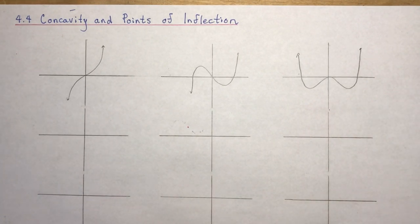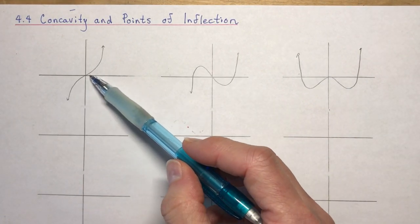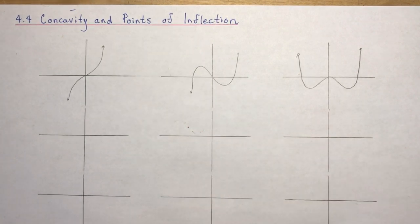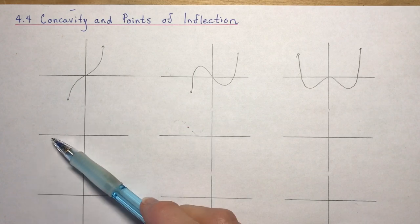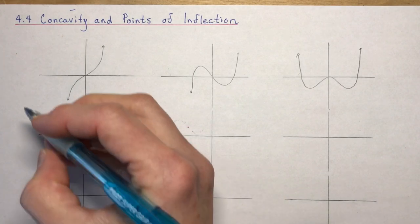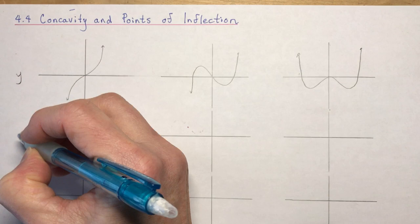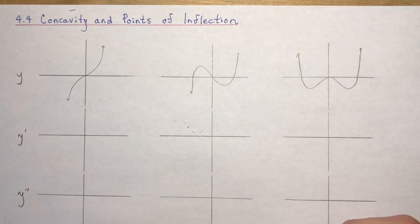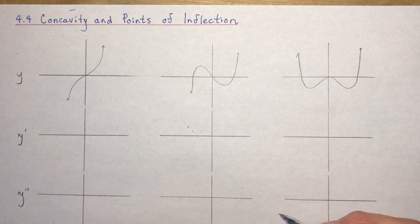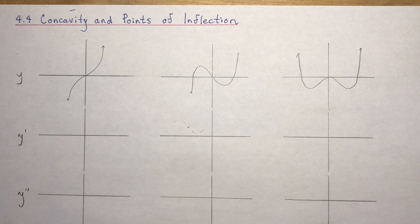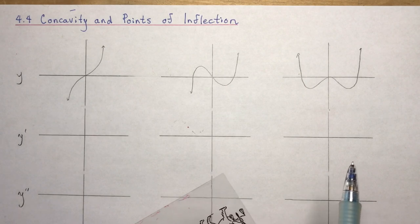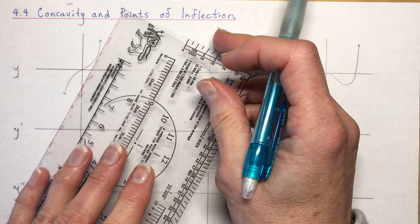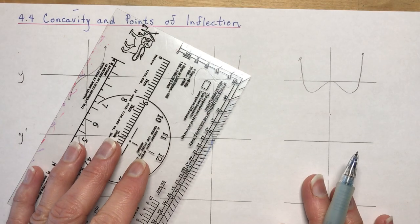So the first graph here we have a basic cubic function. What we're going to do is sketch right below it the derivative function — the first derivative — and then the second derivative. I'll call this y, this will be y prime, and this will be y double prime — first and second derivatives. When you're sketching a derivative function, you're sketching the slope values of the tangent lines.